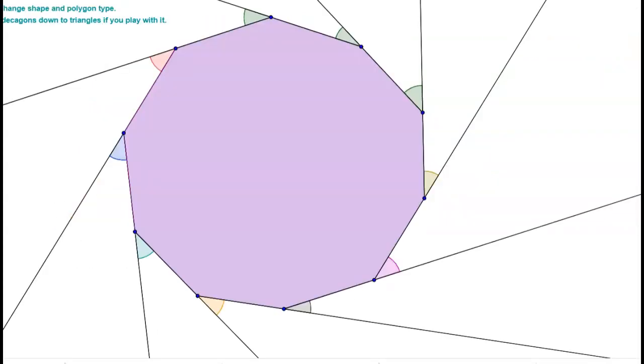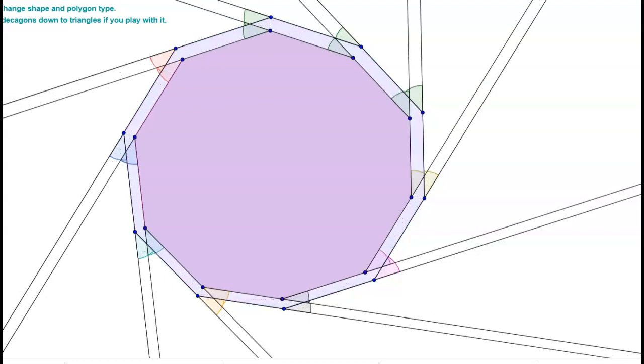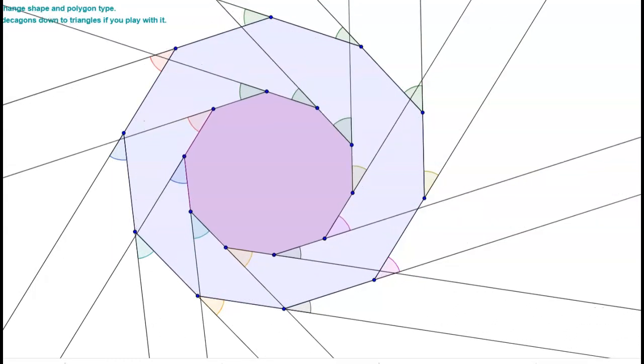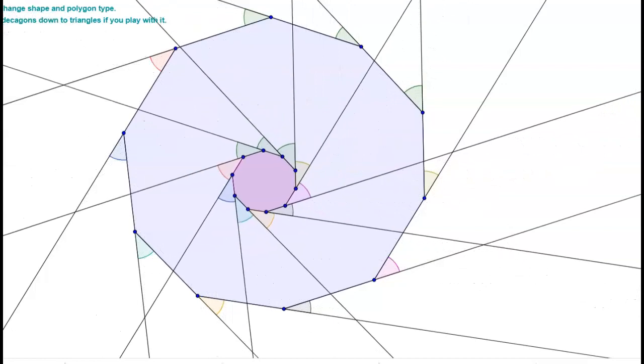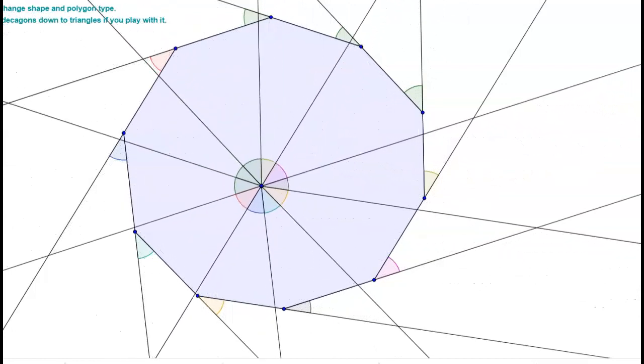And here's a visual. We have this polygon and we have the exterior angles in different colors, and I'm going to shrink down this polygon. Notice the exterior angles eventually form a circle, and a circle is 360 degrees.